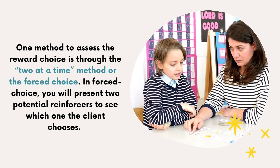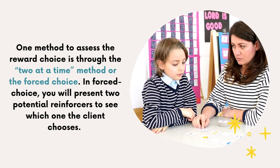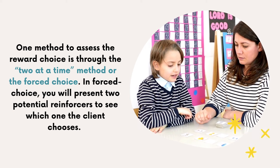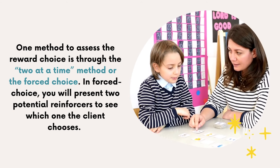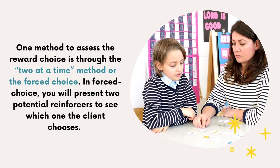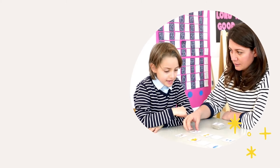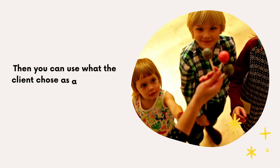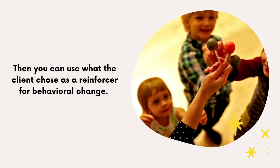One method to assess the reward choice is through the two-at-a-time method, or the force choice. In force choice, you will present two potential reinforcers to see which one the client chooses. Then you can use what the client chose as a reinforcer for behavioral change.